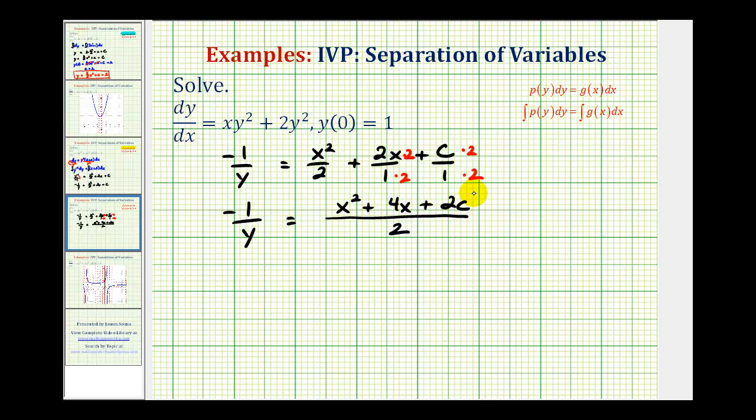Now the reason I wanted to do this is, if these two fractions are equal to each other, then the reciprocals must also be equal. That means y over negative one, or just negative y, must equal two divided by x squared plus four x plus two c.